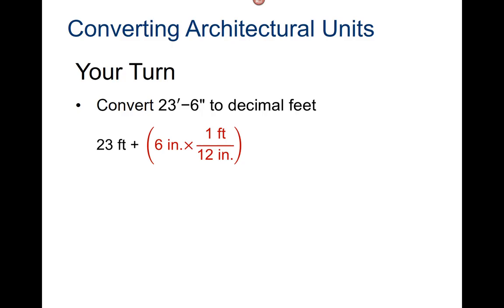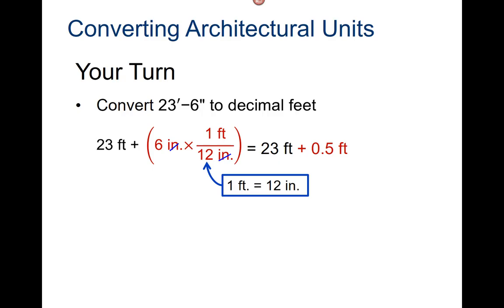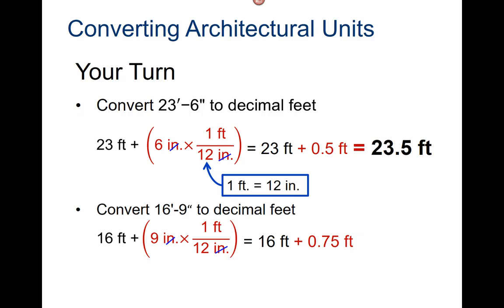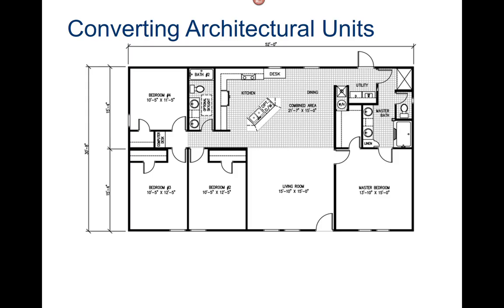Convert 23 feet 6 inches to decimal feet. Cancel the inches. 23 feet plus .5 feet — we get 23.5 decimal feet. Convert 16 feet 9 inches to decimal feet. Cancel the inches. 16 feet plus 9 divided by 12 equals 16.75 feet.